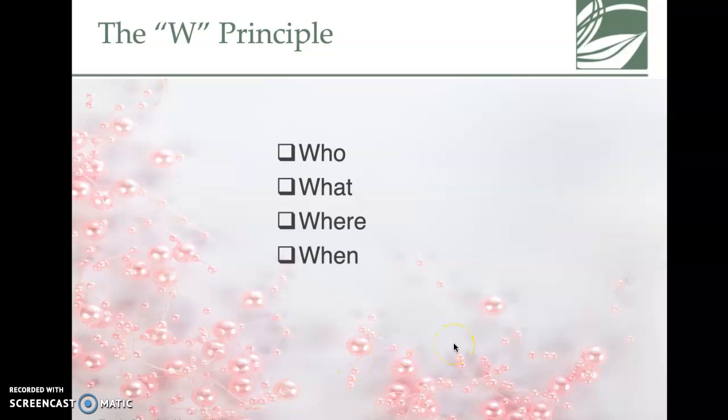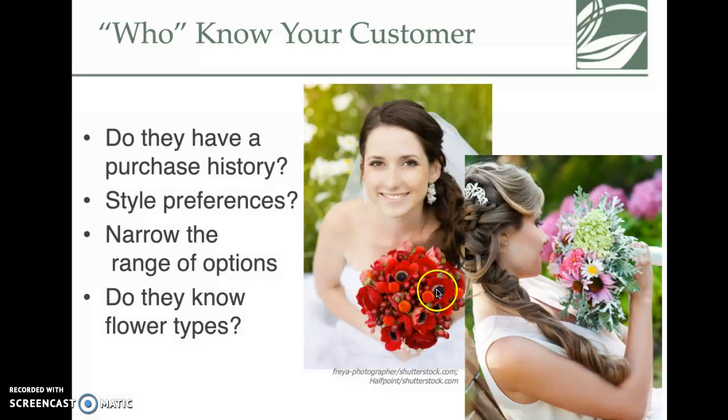The W principle: who, what, where, when. You need to figure those things out as discussion points. For example, if a wedding is in December, you'd want to make sure you're doing seasonal things instead of trying to push peonies or something not in season that would be super expensive.